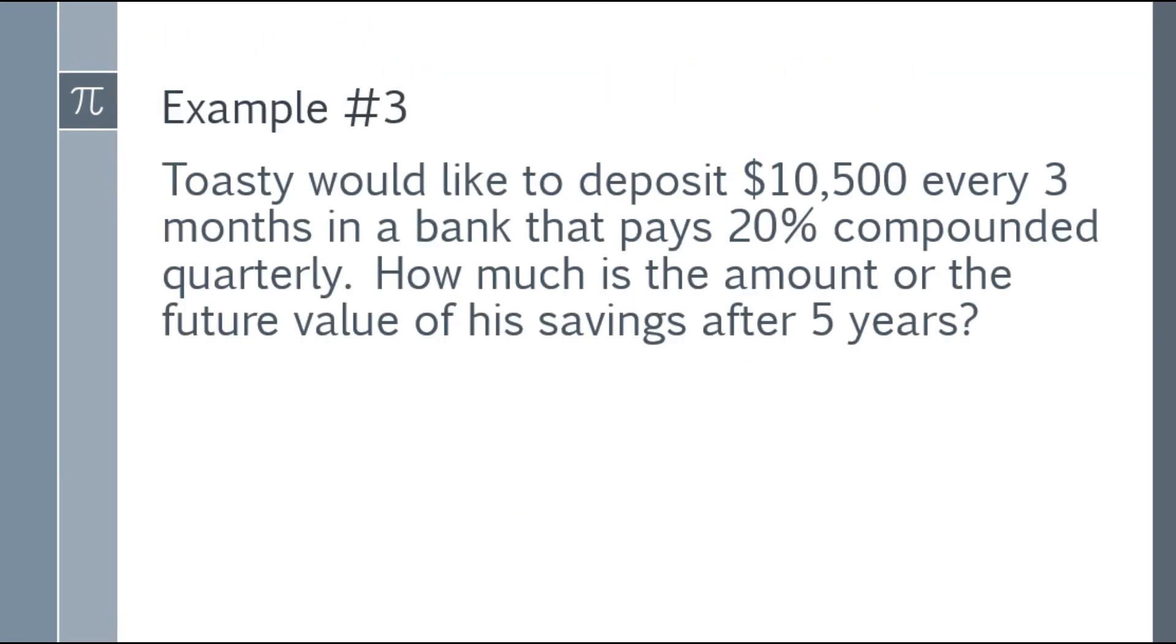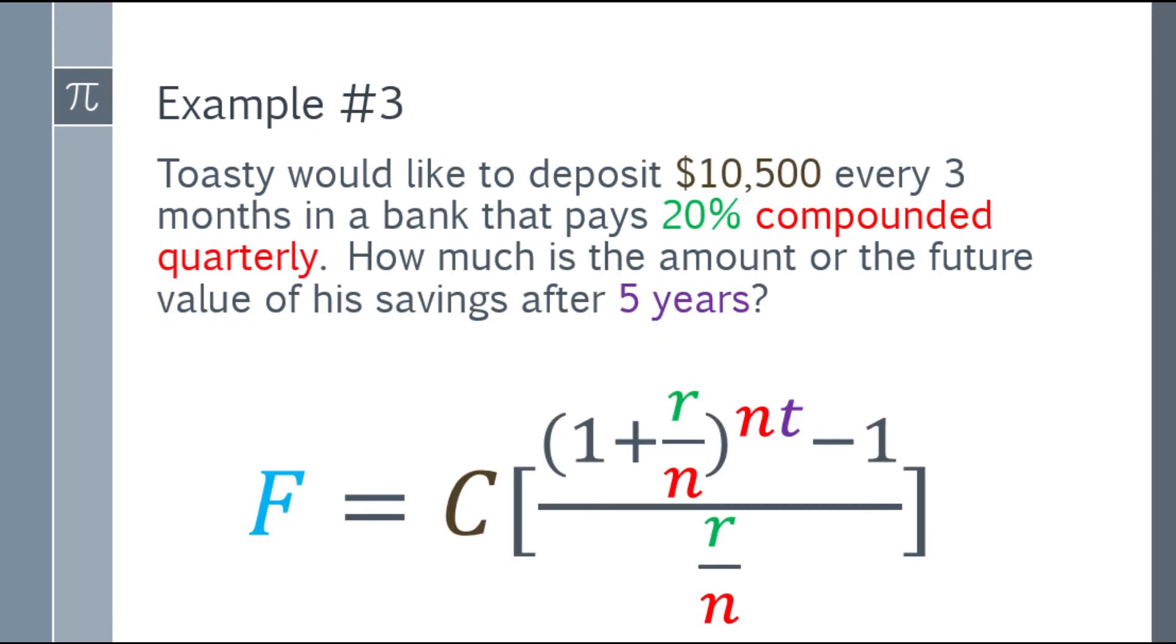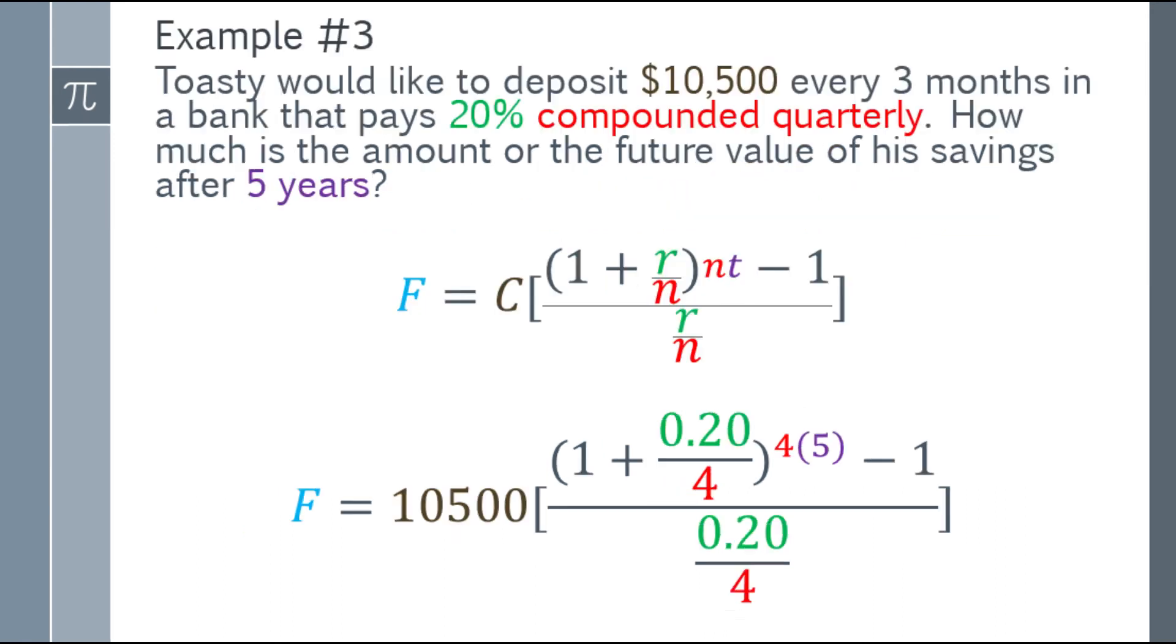Last example. Toasty would like to deposit 10,500 every 3 months in a bank that pays 20% compounded quarterly. How much is the future value of his savings after 5 years? Let's check - every 3 months with compounded quarterly, so that's ordinary annuity.